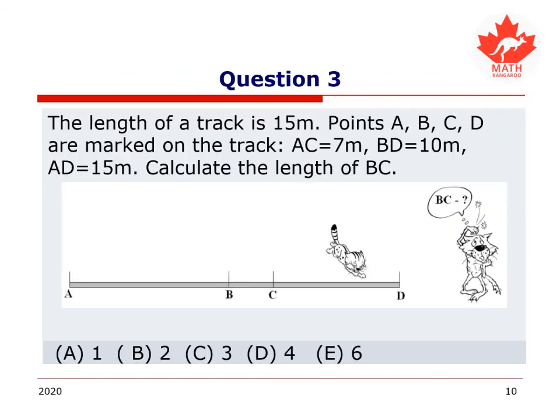Let's try another question. The length of a track is 15 meters. Points A, B are marked on the track. AC is going to be 7 meters. BD, the length is 10 meters, and the whole length AD is 15 meters. Calculate the length of BC. Again, take a couple of seconds with this problem, work it out on a piece of paper, and then come back to this video.